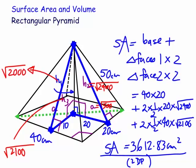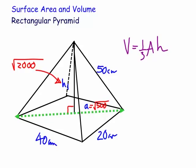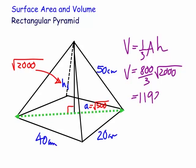For the volume, we don't need all the triangular face heights — we just need H1. For all pyramids, the volume is one-third the area of the base times the perpendicular height, which is H1 in this case. The area of the base is 20 times 40, which is 800. So that's 800 divided by 3 times the square root of 2000, which works out to be about 11,925.70 centimeters cubed.